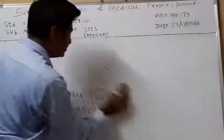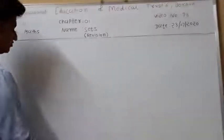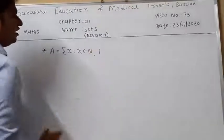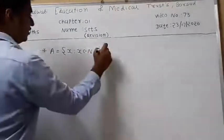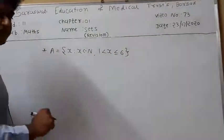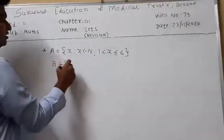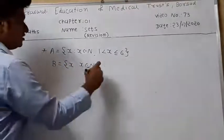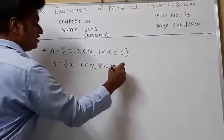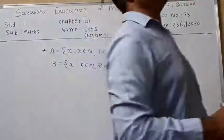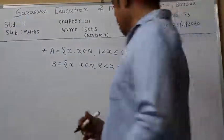Suppose two sets are given: set A equals {X : X belongs to N, 1 < X ≤ 6} and set B equals {X : X belongs to N, 2 < X ≤ 7}. Find the value of A intersection B.